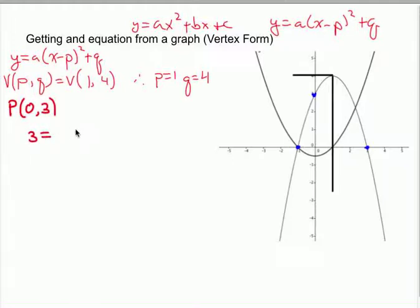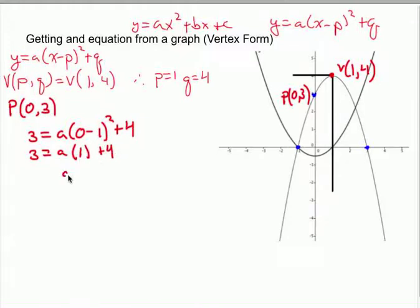Substitute everything. 3 is equal to a times 0 minus 1 squared plus 4. So there's my x and y from my point p, 0, 3. I've got my x and y point. I've got my p and q values from my vertex, which I found here. So my vertex is 1, 4. And now all I have to do is solve for a. So 3 is equal to a times 0 minus 1 is negative 1. Negative 1 squared is 1 plus 4. Rearrange and isolate for a. 3 minus 4 is negative 1, and negative 1 divided by 1 is negative 1.